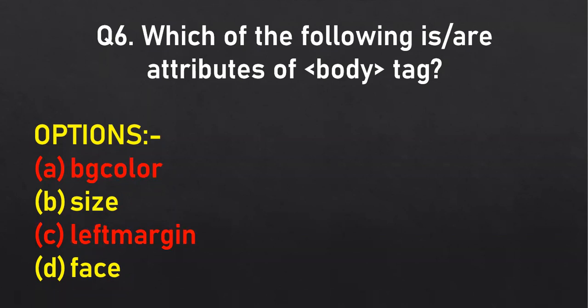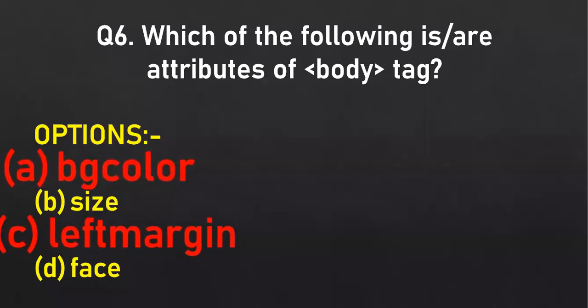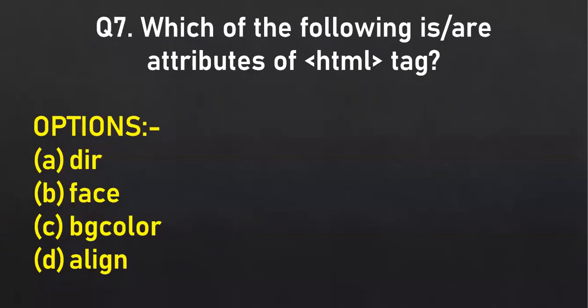Are you enjoying the quiz? Response is very low. Seventh MCQ: which of the following is or are attributes of the HTML tag? Only option A, direction (dir) — direction left to right or right to left. There is one more attribute: lang, language. So two attributes are there — lang and dir. Lang is language. Very correct.